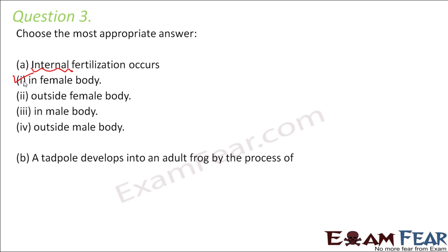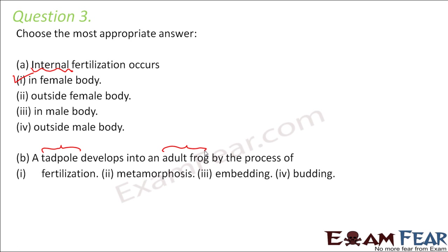A tadpole develops into an adult frog by the process of — a tadpole looks very different from an adult frog, so there are drastic changes involved during this development process. This is called metamorphosis — that is the term given to these kind of drastic changes during the life cycle of an organism.